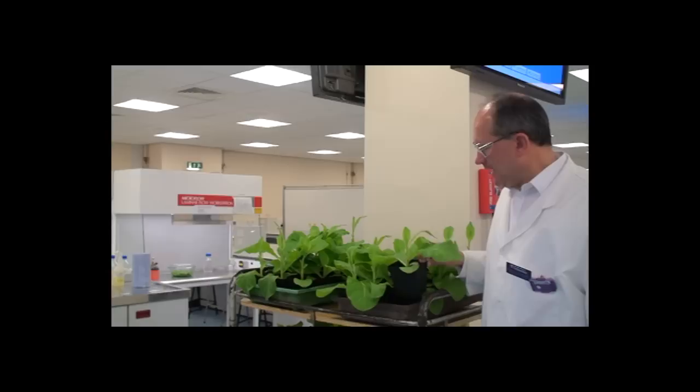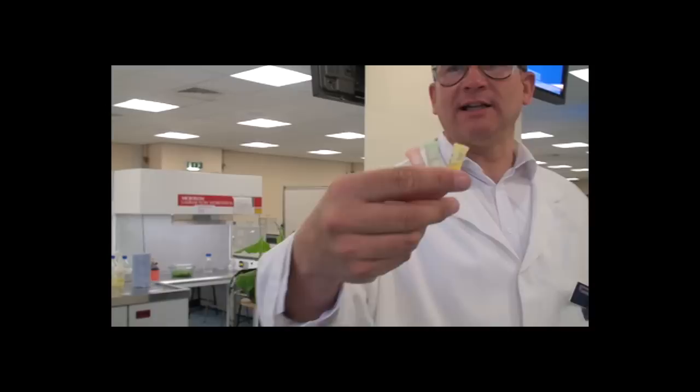And then in the second part, we'll be looking at how different Agrobacterium bacteria, which I have in the little tubes here, will be able to induce carrot cells from sections of carrot root to divide. Now let's start on the practical.